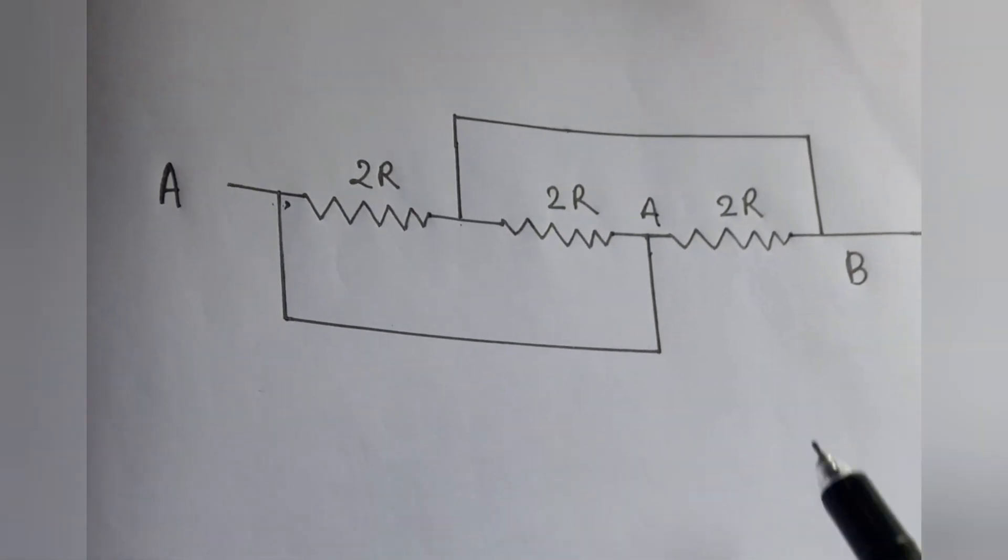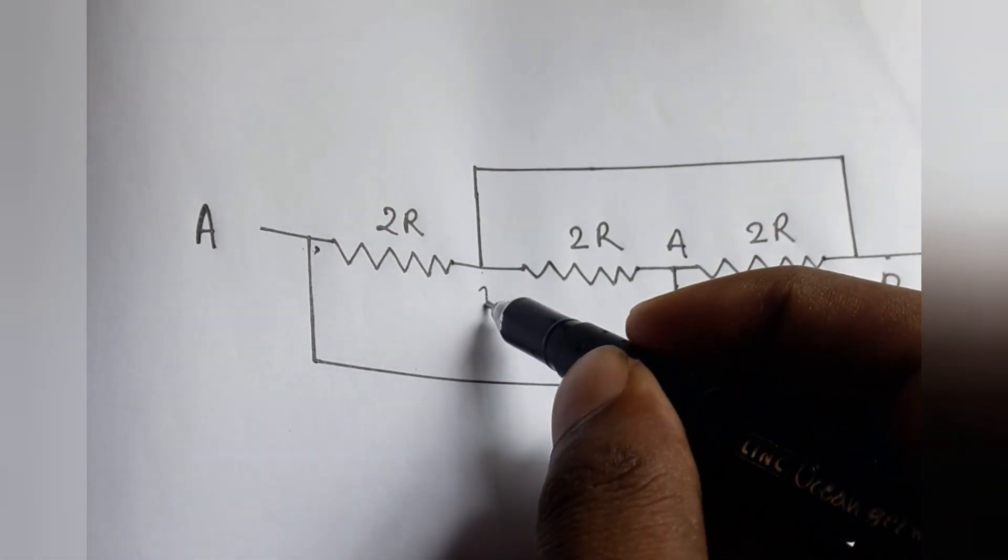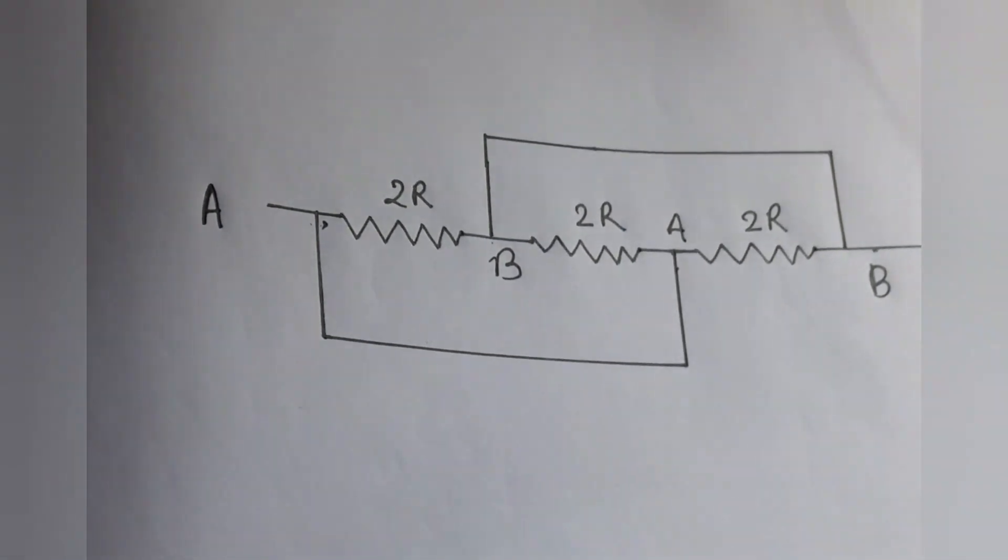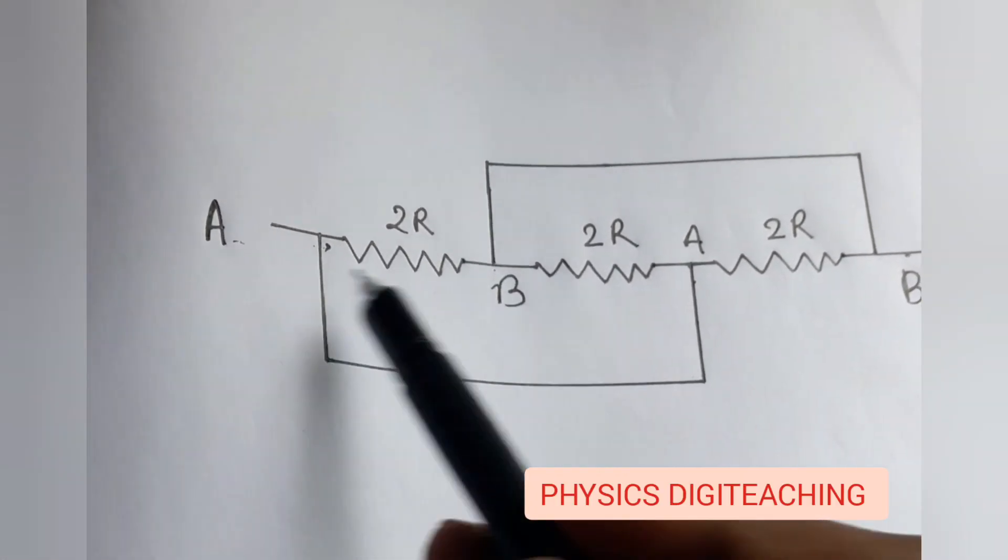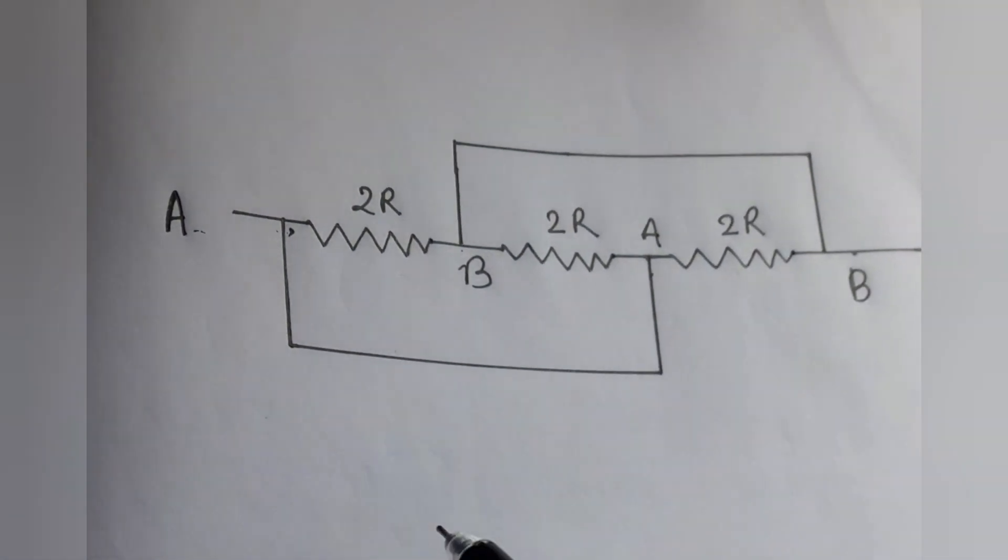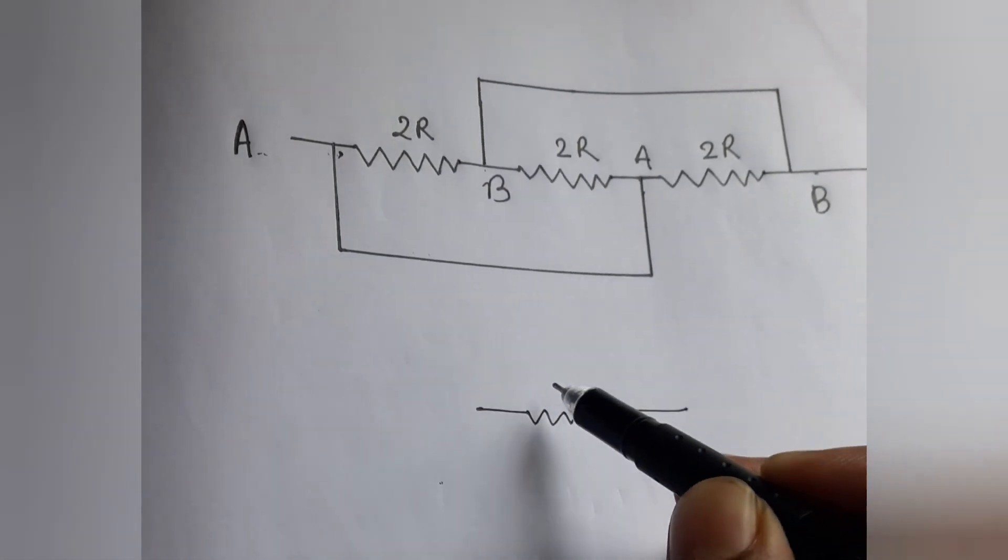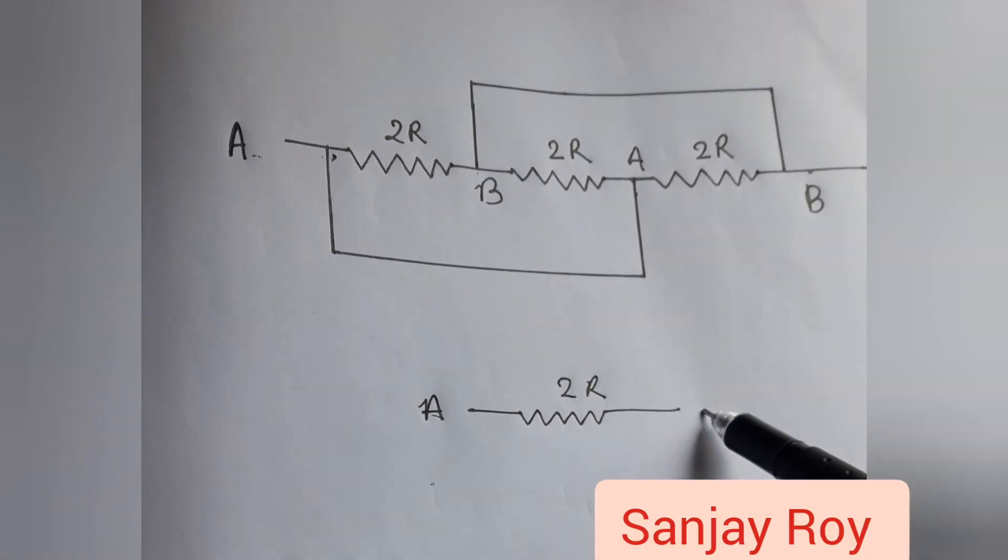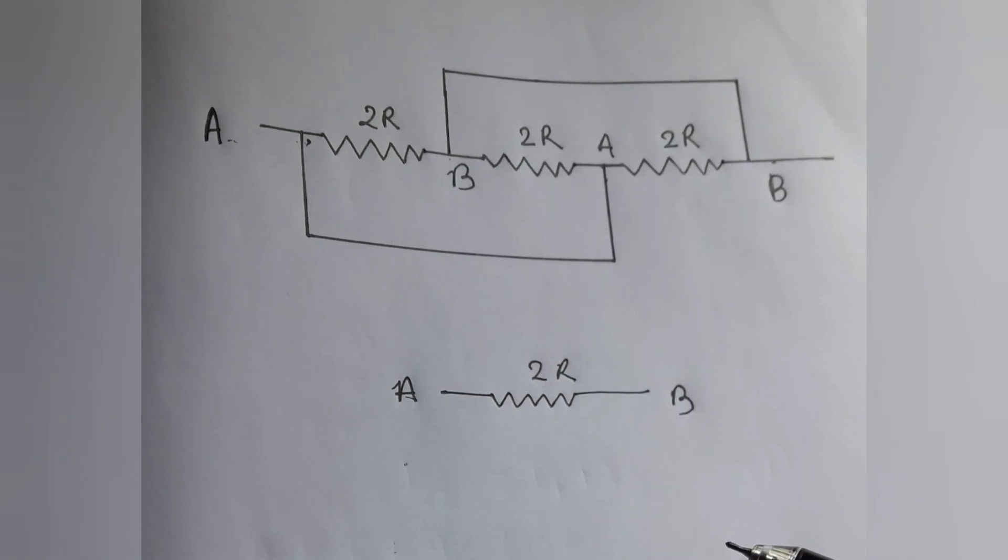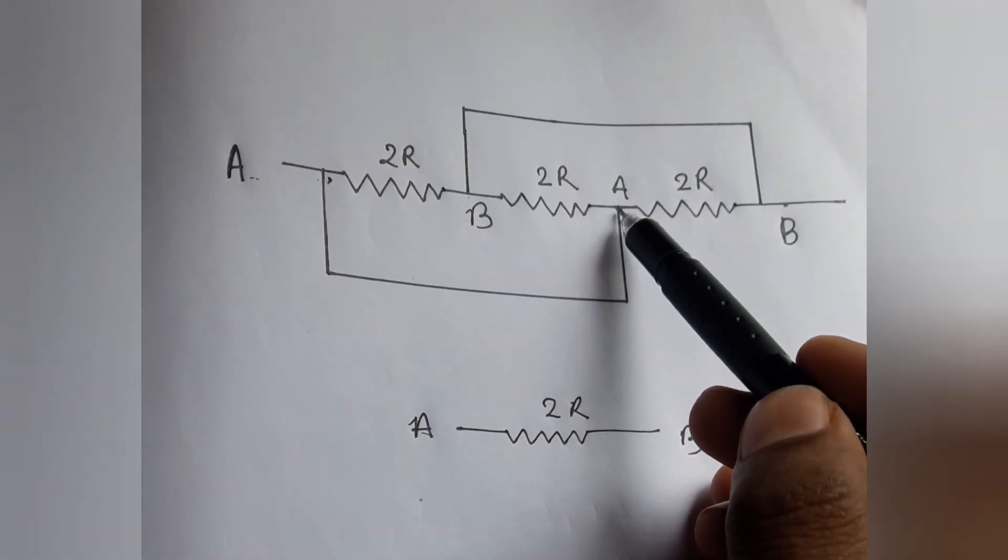Again, this point is B and this point is also B. We see that the resistance 2R has the two ends A and B. Now we draw the first resistance 2R. This is 2R, and this is the point A, and this is the point B.